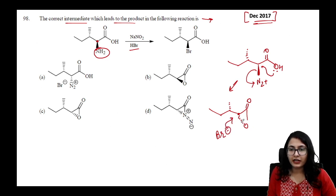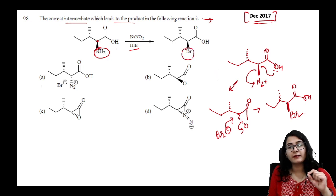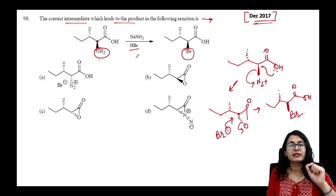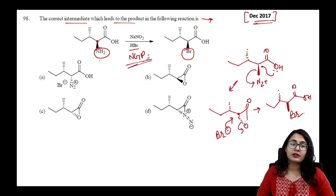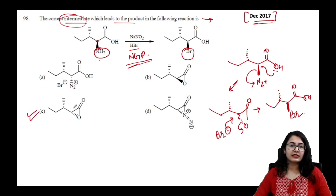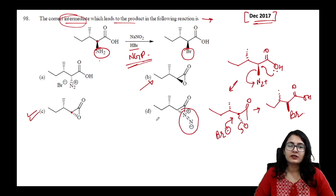Bromide (Br⁻) then attacks the three-membered ring. The product shows retention — Br is above and the amine was also above — confirming NGP has taken place. The correct intermediate is option C; option D (oxygen leaving) is wrong because diazonium, not oxygen, is the leaving group.